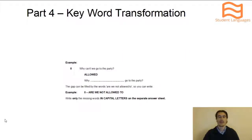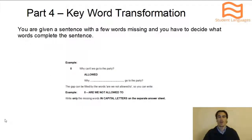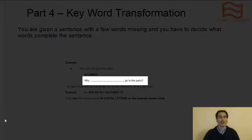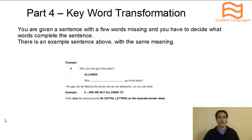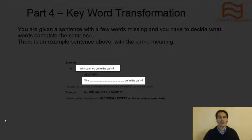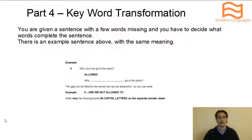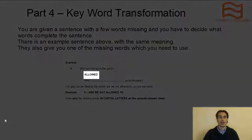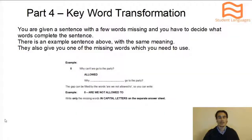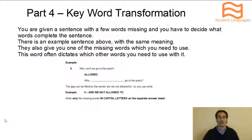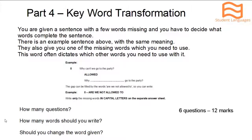This is what keyword transformation exercises look like. You're given a sentence with a few words missing and you need to decide which words complete it. They give you an example sentence above and you need to make sure your sentence and that sentence have the same meaning. They also give you a keyword which you need to use, and this word helps you know which other words go in the sentence. There are 6 questions and you are awarded 2 marks for every correct answer, so there are 12 marks in total available.